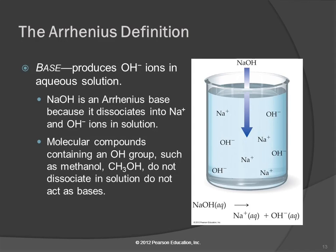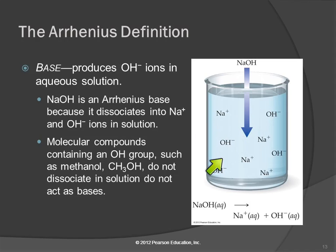The definition of a base, according to Arrhenius, is that it produces hydroxide ions in aqueous solution. Sodium hydroxide is an example — it's an ionic compound containing sodium ions and hydroxide ions. When it dissolves, it forms sodium ions and hydroxide ions. It's important to note that molecular compounds that have OH in them are not going to do that. For example, methanol is an alcohol — it looks like a base because it has OH, but it's not. With Arrhenius bases, we're only looking at ionic compounds like sodium hydroxide or potassium hydroxide.